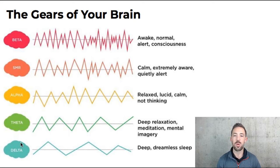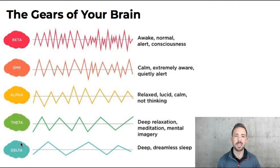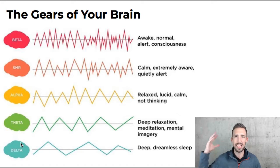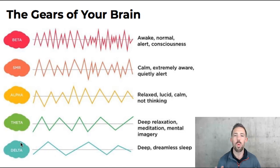Then the next one up is alpha. You're relaxed, not really thinking, but also not sleeping — maybe you're watching TV, kind of zoned out, kind of chill. You're lucid, calm, conscious but just chill. Then higher up we have beta, and there's also an SMR wave and gamma waves. Beta and gamma are the highest level waves — that's when you're more awake, more alert, and fully conscious.